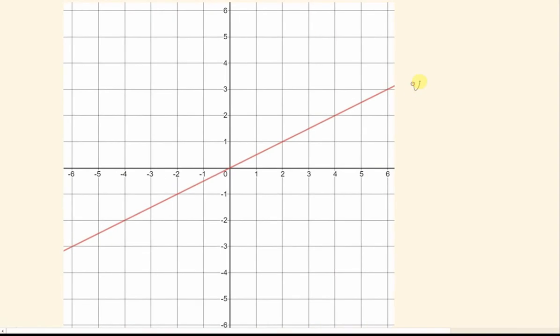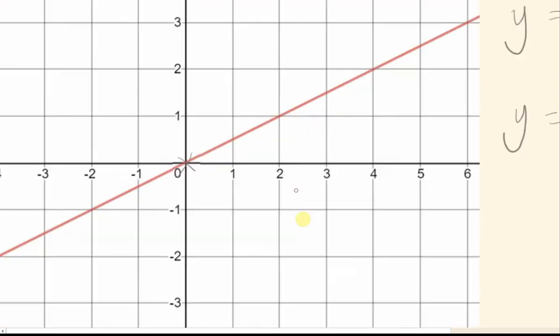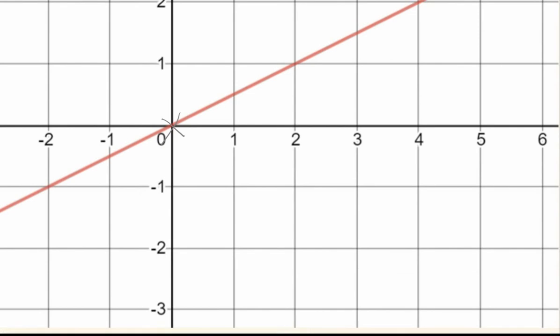This equation, same idea. First, I'd always recommend writing down y equals mx plus c. Again, we can see c is going to be 0, because I cut through 0. And now I need to work out the gradient. So again, I zoom in a bit. If I go 1 square across, I can see that I go half a square up.